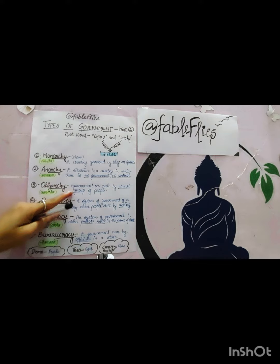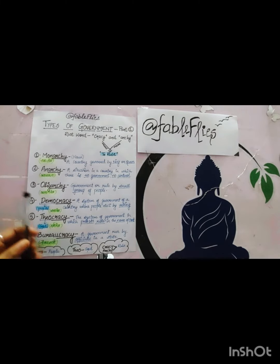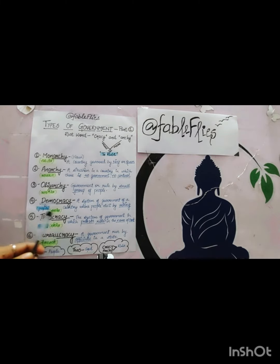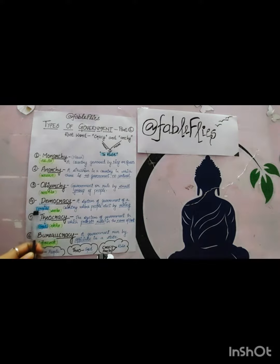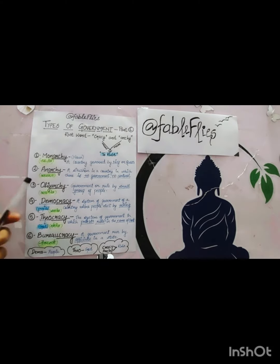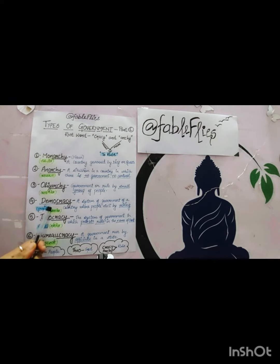Democracy — you all know that. Here we discover a very new word: 'demo', which means people, and 'cracy' means rule. So democracy is where there is a rule of the people — where people elect their representatives and cast their vote to elect them.